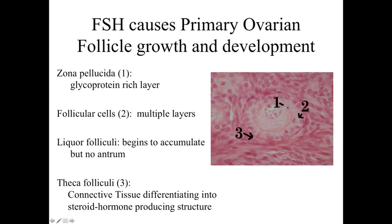We're going to see the presence of a zona pellucida — a glycoprotein-rich layer immediately surrounding the developing ova. The follicular cells may be involved with production of liquor folliculi, the fluid of the follicle, though at this early stage it hasn't been produced yet. Outside of the ovarian follicle itself, we're going to have connective tissue referred to as the theca folliculi, which contains specialized connective tissue cells that will differentiate into a steroid hormone-secreting structure.